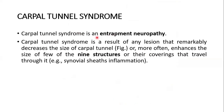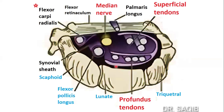Carpal tunnel syndrome is an entrapment neuropathy. It results from any lesion that remarkably decreases the size of the carpal tunnel, or more often enlarges some of the outlined structures or their coverings that travel through it — for example, synovial sheath inflammation. Either the size of the tunnel is decreased or the synovial tendons with their sheaths are inflamed.